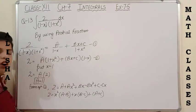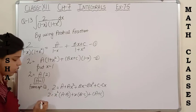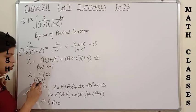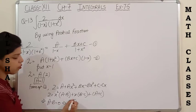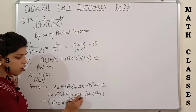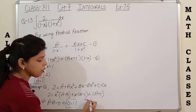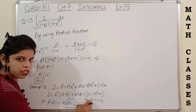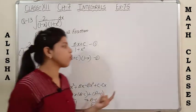Comparing coefficients: since there is no x squared term on the left-hand side, A minus B equals 0. With A equals 1, we get B equals 1. Similarly, since there is no x term on the left-hand side, B minus C equals 0. With B equals 1, we get C equals 1. So A, B, and C are all equal to 1.